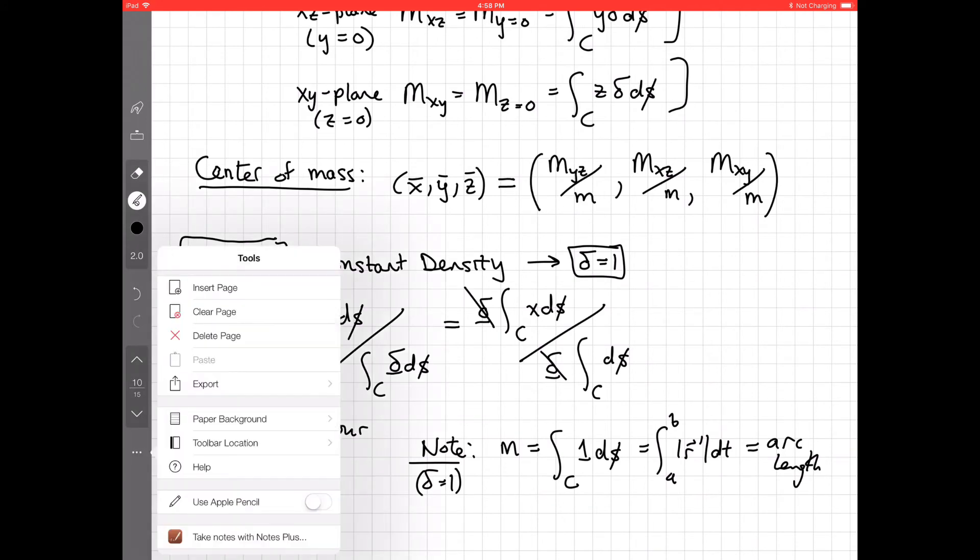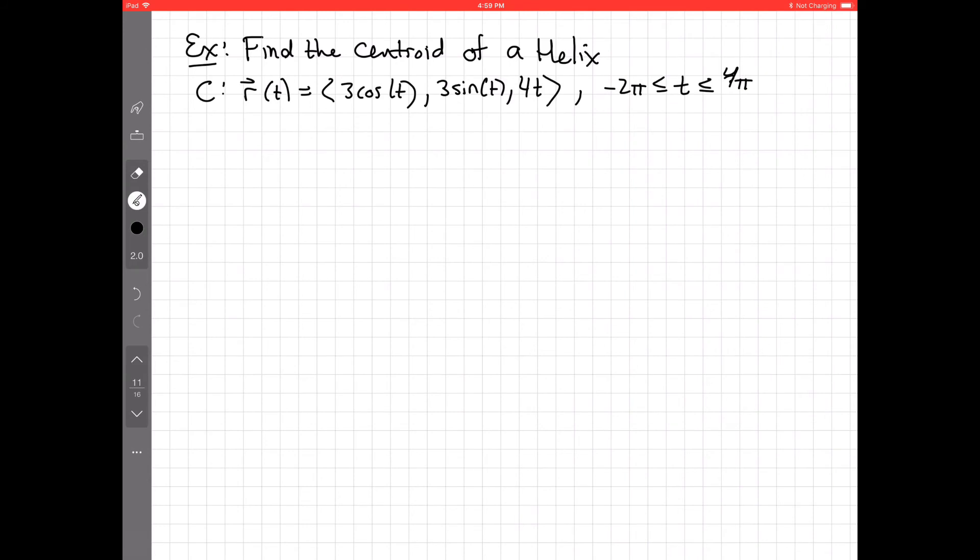Okay, now let's conclude with an example. So, let's find the centroid of a helix, a particular helix. In particular, let's have our curve be parameterized by 3 cosine t, 3 sine t, 4t, our old friend where the numbers work out pretty nice. And we'll go from negative 2 pi to 4 pi. So, we're going to go around this helix 3 full times.